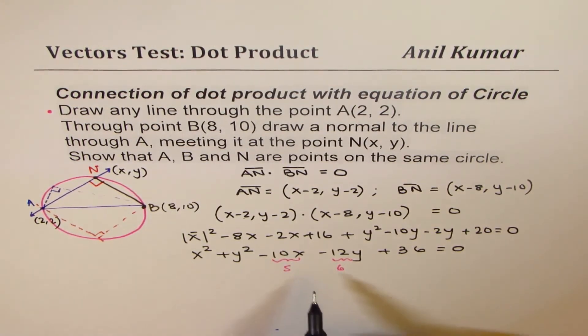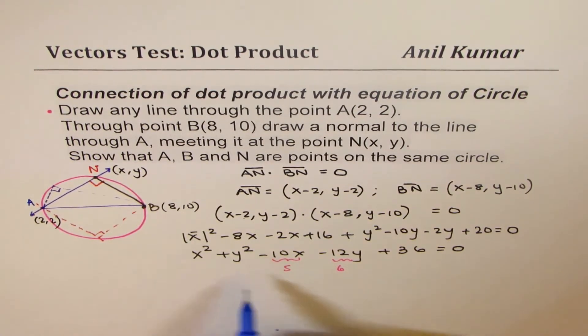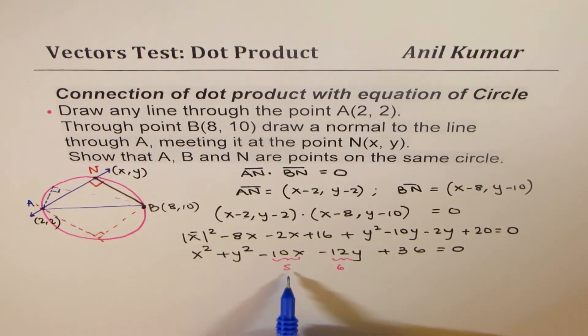Let me write down. So this equation represents a circle with center at 5, 6. Now, some of you who are not very clear about the equation of a circle, what we can do is complete the squares and find that this is really a circle.